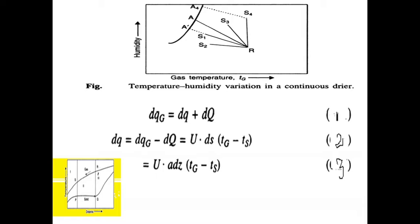Let us make an energy balance. The heat lost by the gas DQG is transferred partially to the solid DQ and partially lost as capital Q (heat loss). For a dryer differential length DZ, the energy balance is: DQG equals DQ plus D-capital-Q. This is equation number 1.